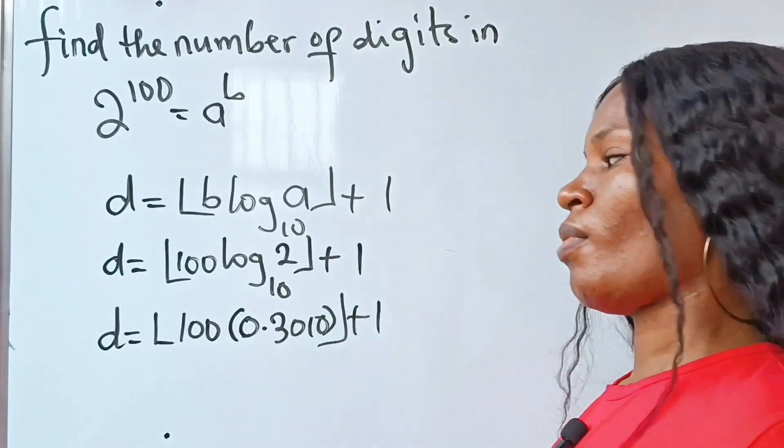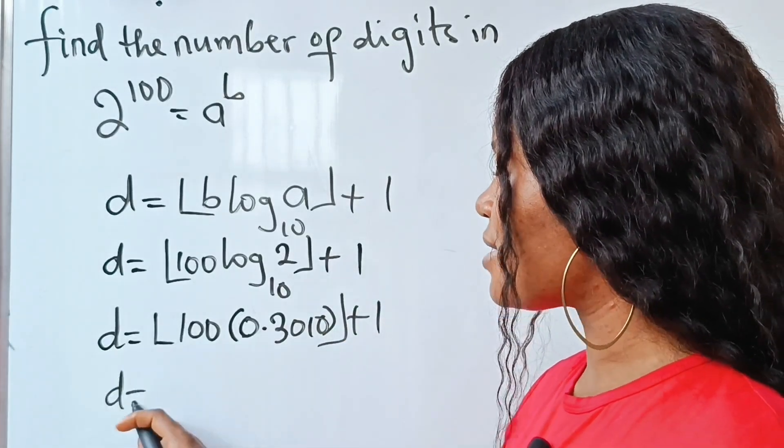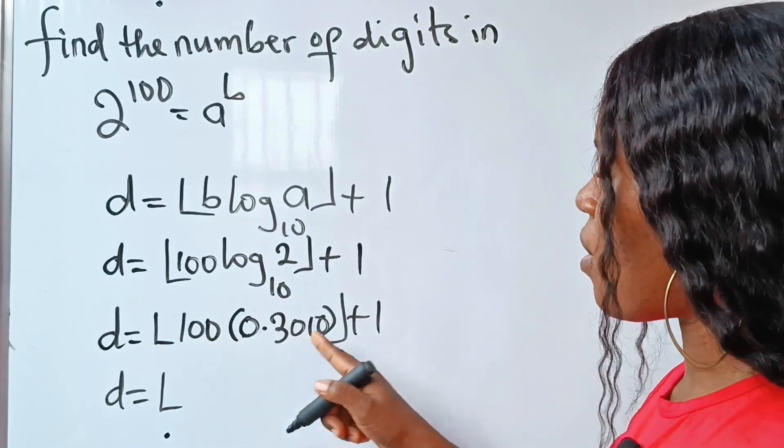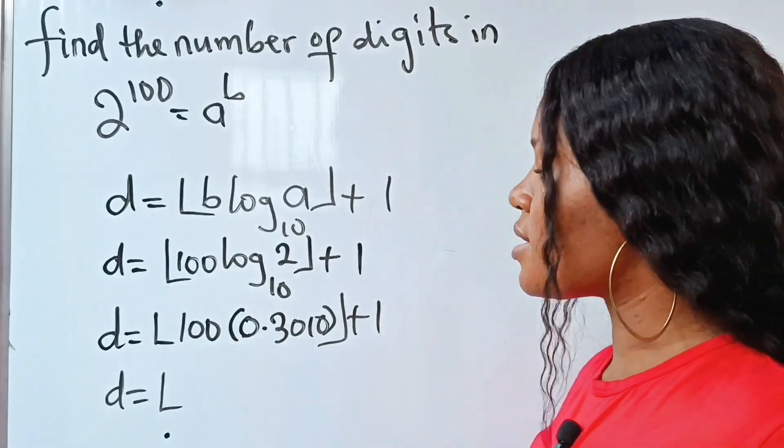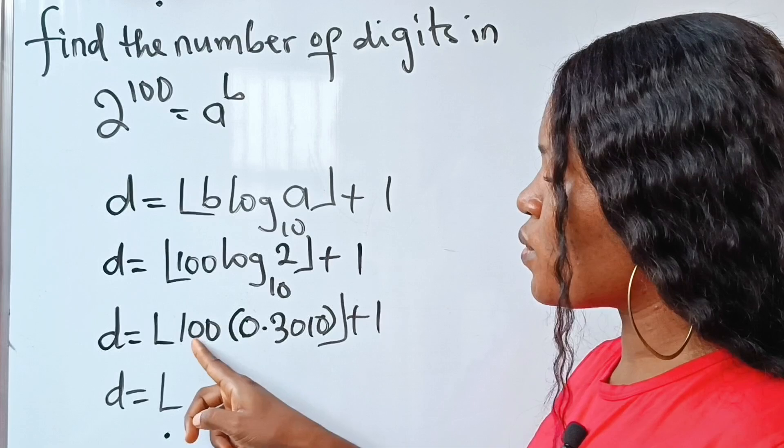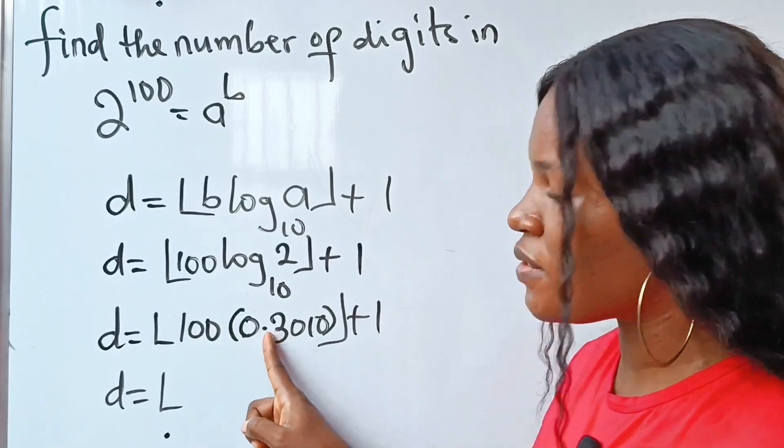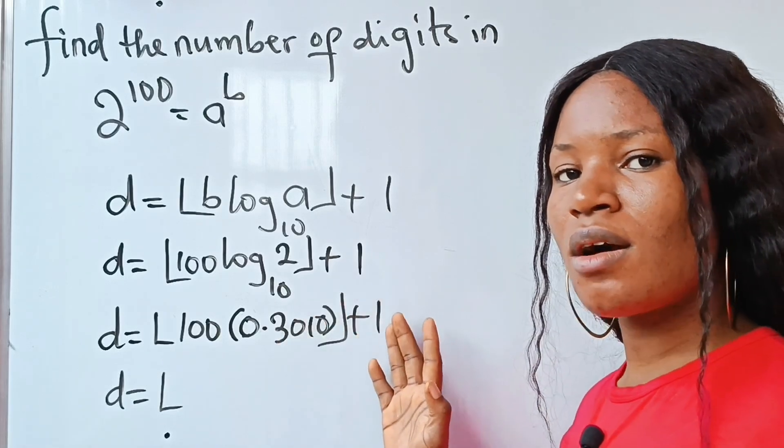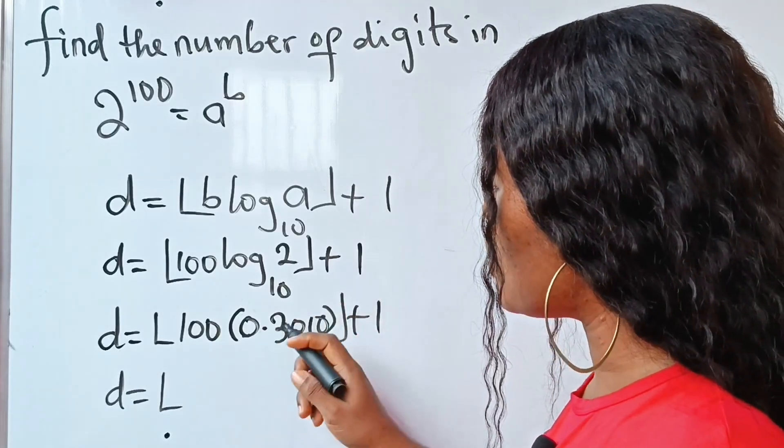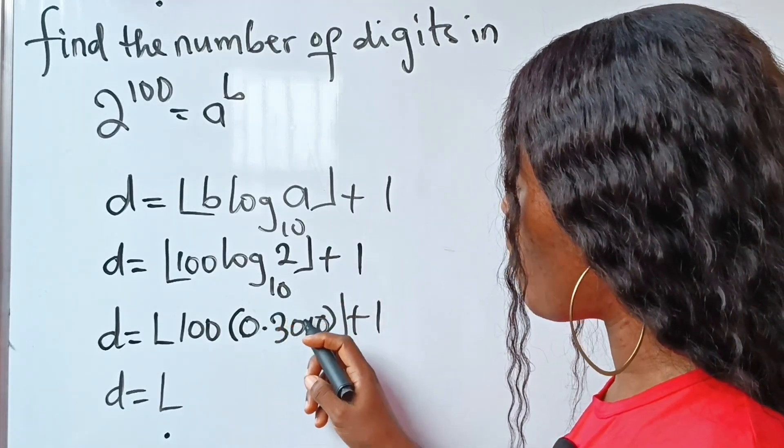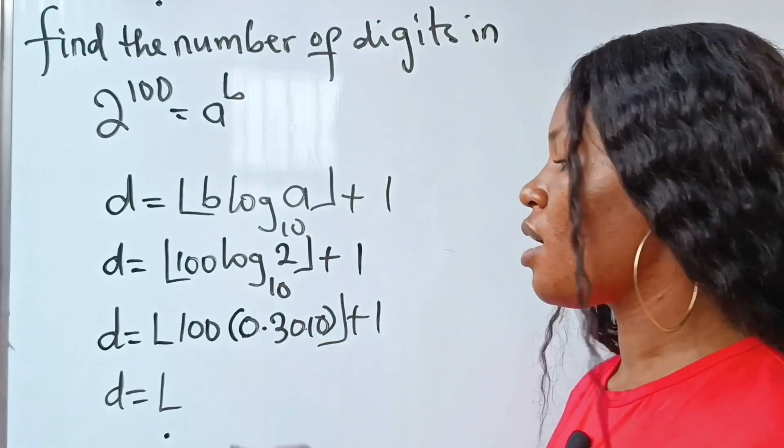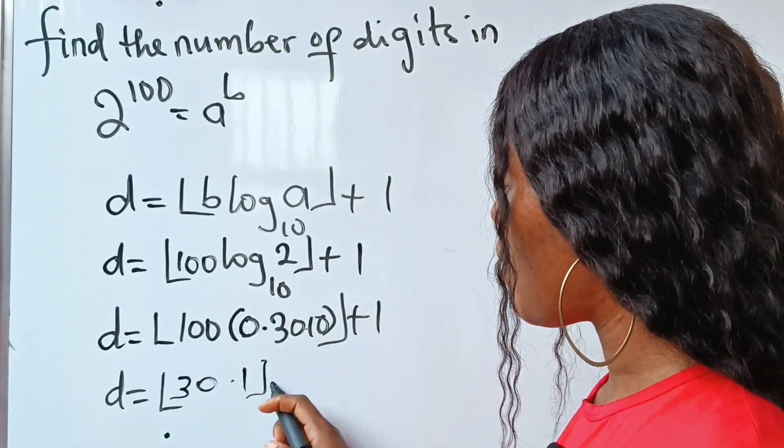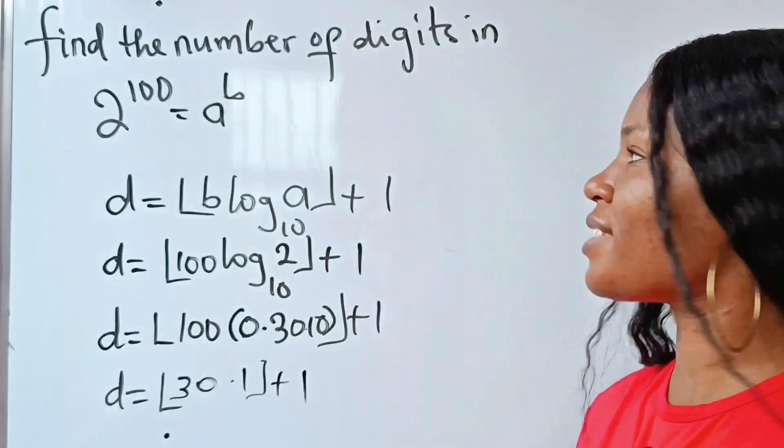So that means that our d is equal to the floor of 100 times 0.3010, which is actually easy. We have two zeros here, so we only shift—we have to shift this decimal point two places to the right. So when we do that, we notice that the new position of our decimal point will be here, so we are going to have the floor of 30.1 plus 1.